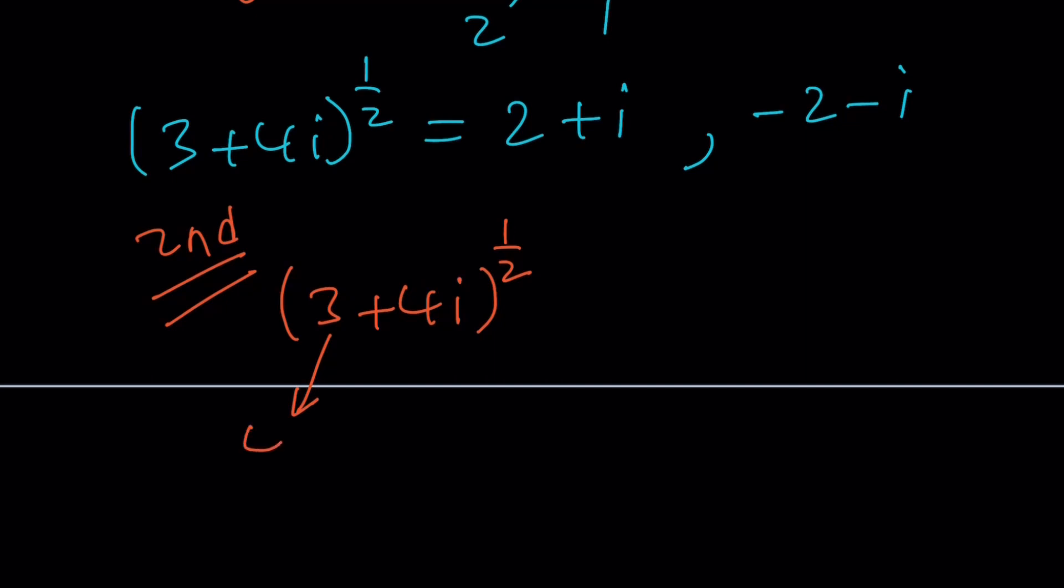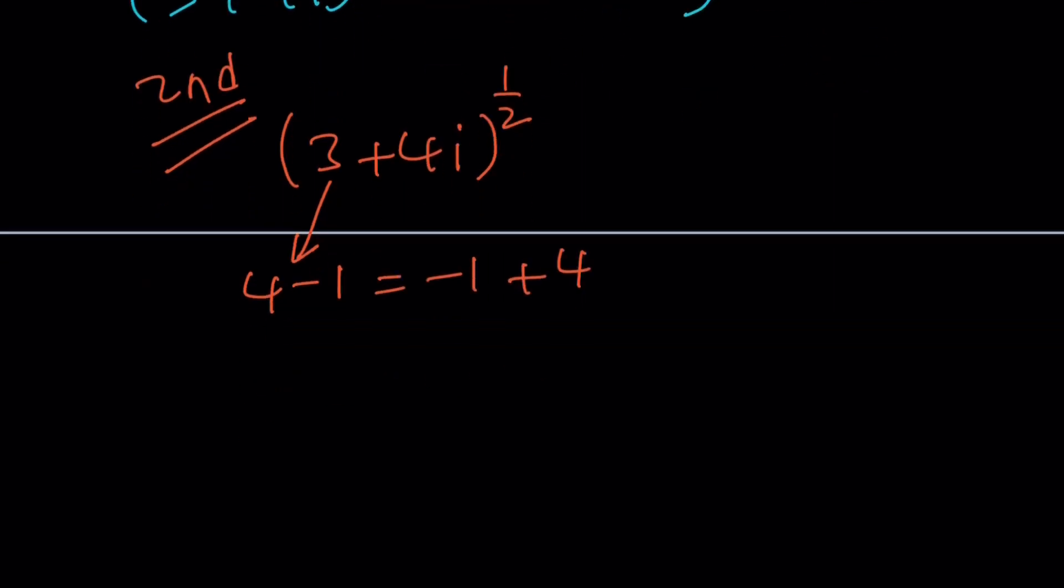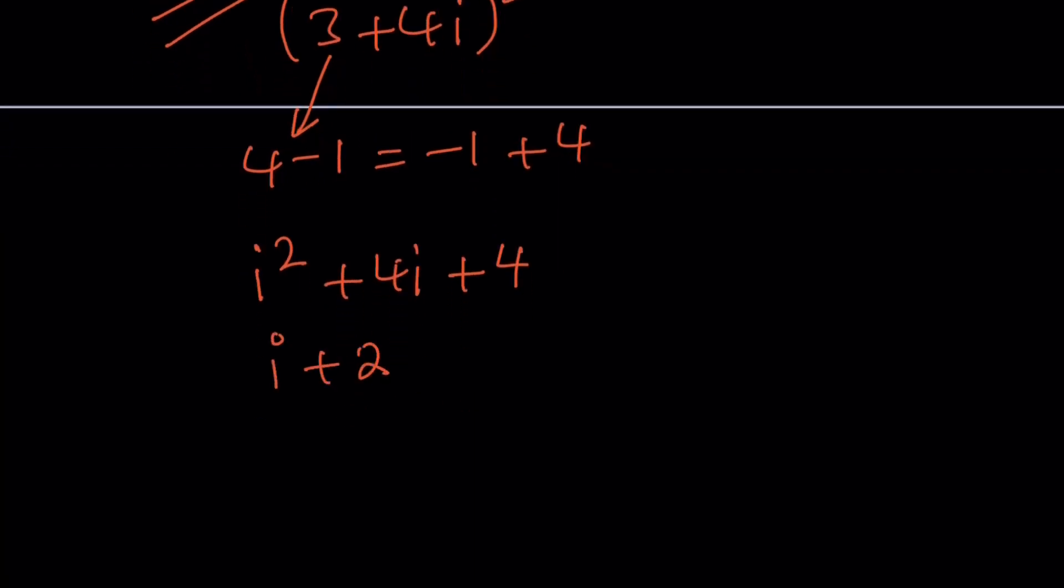Hey, 3 can be written as 4 minus 1 or negative 1 plus 4. Now, why negative 1? Because negative 1 is i squared. So I can do the following: i squared plus 4i plus 4. Now, what does this look like? If you said, this looks like i plus 2 squared, you got it. i squared is negative 1 again. Negative 1 plus 4 is 3, and 3 plus 4i gives us this. So you're trying to find the square root of i plus 2 squared. I guess I could write it as 2 plus i squared. So it's probably better to stick with the standard notation.